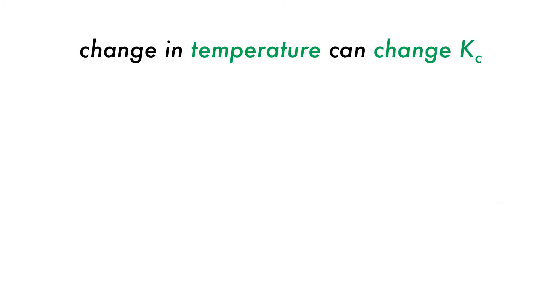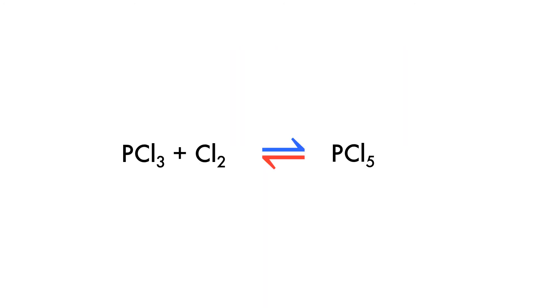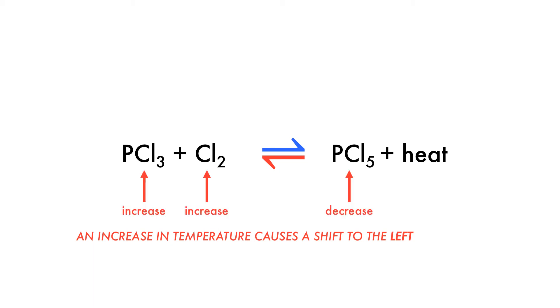Changes in temperature are quite complex because it is the only change which will change the equilibrium constant value. Looking at the previous reaction of PCl3 and Cl2 in equilibrium with PCl5, the forward reaction is exothermic, which makes the reverse reaction endothermic. If heat is considered as a component of the reaction, then an increase in temperature will cause the system to shift towards the endothermic side in order to consume the excess heat. Conversely, a decrease in temperature will cause a shift to the exothermic side in order to produce more heat.